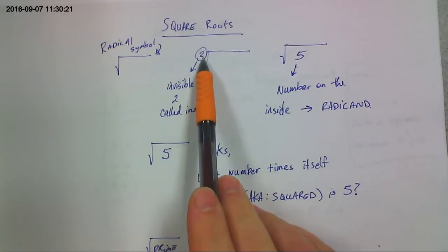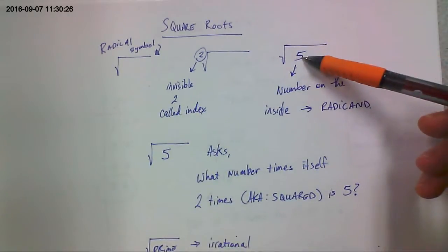This means the number times itself twice. If there was a three, you'd be looking for a number cubed.